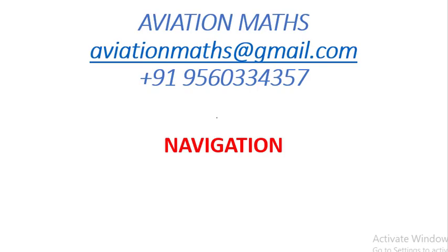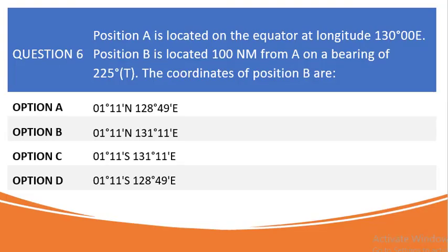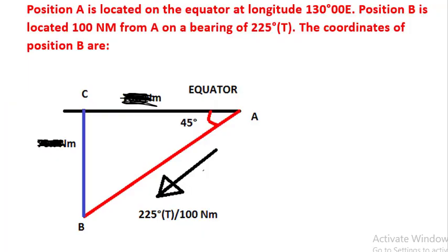Hello everyone, welcome once again to another general navigation mathematical problem. Question 6 in the BNC series states that position A is located on the equator at longitude 130 degrees east. Position B is located 100 nautical miles from A on a bearing of 225 degrees true. Find the position or coordinates of position B. Answers are as indicated — you have to choose between option A, B, C, or D.